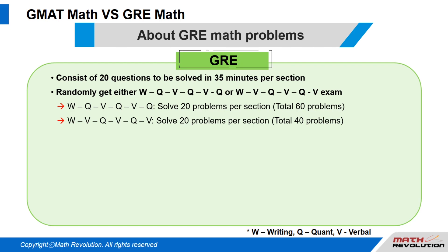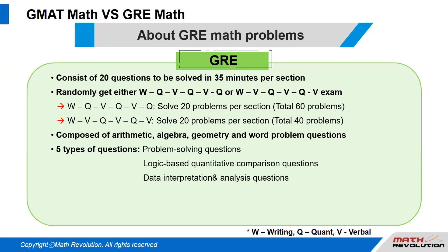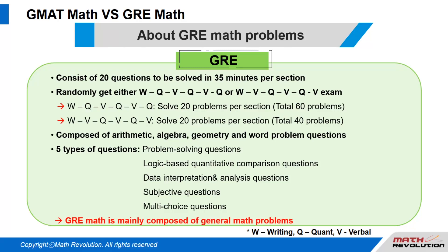W stands for writing. The GRE math exam includes arithmetic, algebra, geometry, and word problem questions. There are also problem-solving questions, logic-based quantitative comparison questions, and data interpretation and analysis questions. Others are subjective questions and multiple-choice questions, although there are some logic-based problems. The GRE math is mainly composed of general math problems.